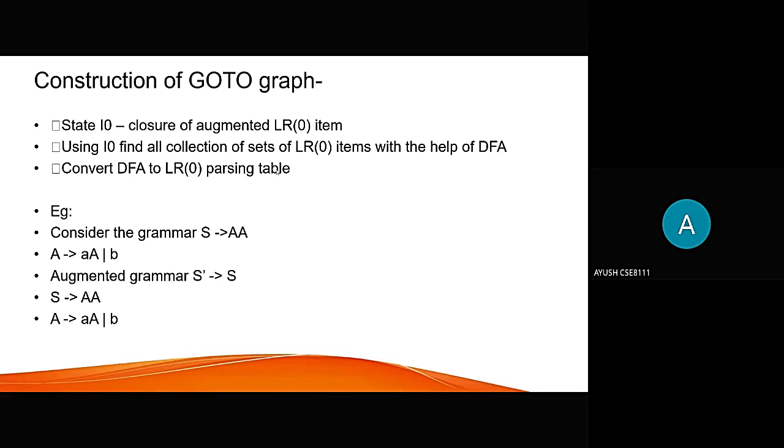Construction of goto graph. Goto graph construction considered as the state i0, closure of the augmented LR0 item. Second is using i0, find all collection of set of LR0 items with the help of DFA. Convert DFA to LR0 parsing table. Here is the example, consider the grammar S gives A, A gives a slash b, and augmented grammar S' gives S, S gives A and A gives a, b.